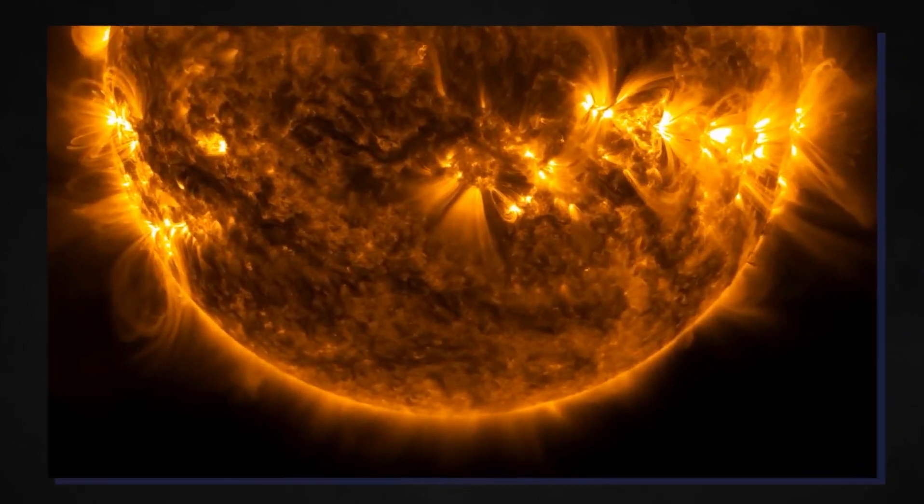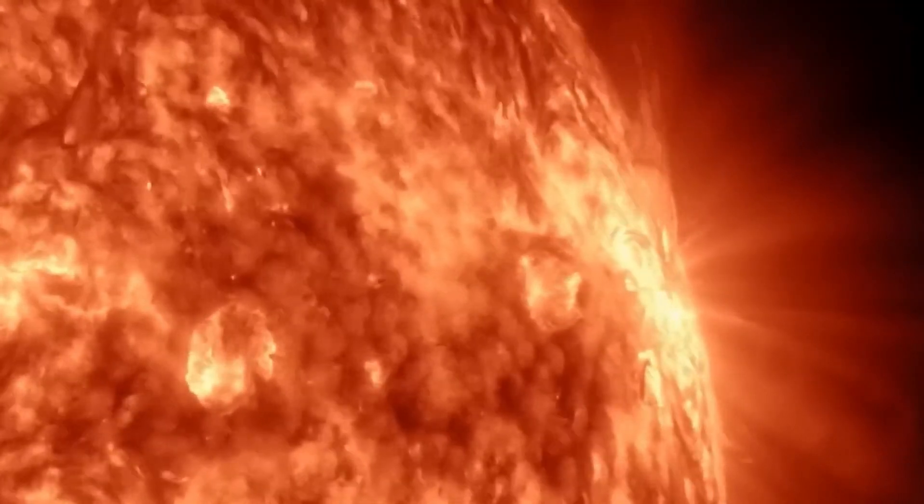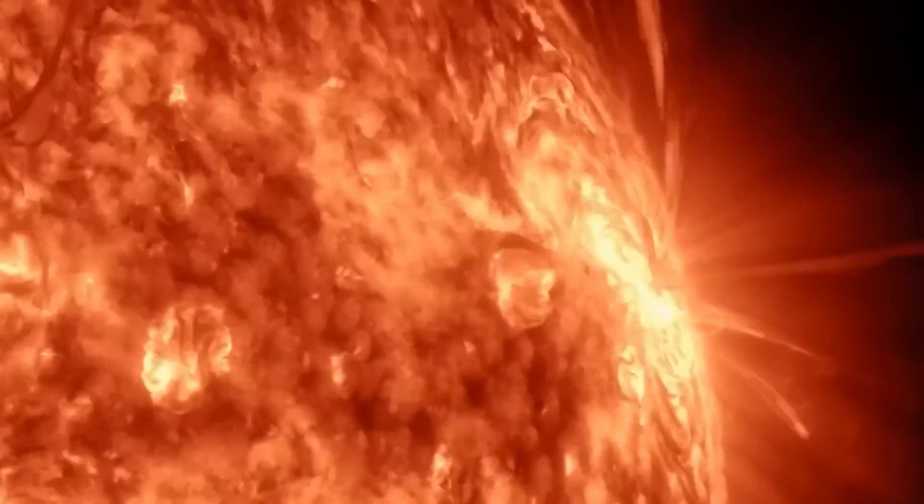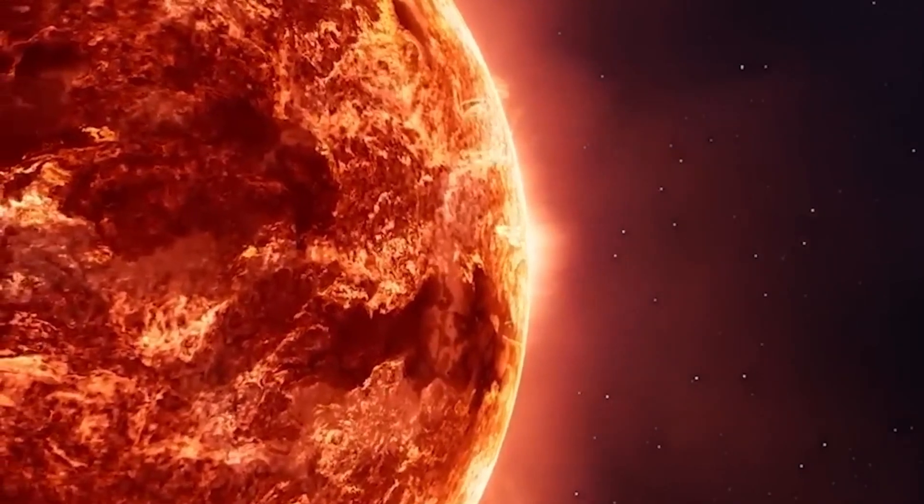Betelgeuse, a massive star in its late stages of life, is of immense size. Its dimensions are so vast that if it were positioned at the center of our solar system, it would extend as far as Jupiter's orbit.